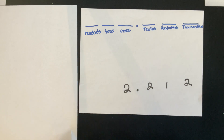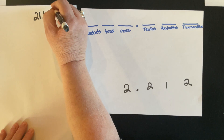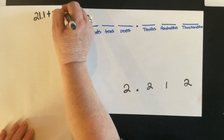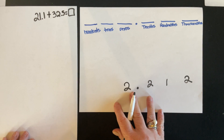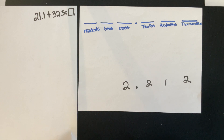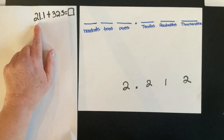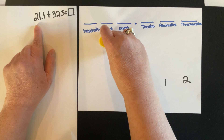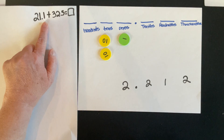Let's take a look at this problem. If I had 21 and one-tenth and I was going to add that to 32 and five-tenths, we're asking kids to find the sum. Here's a place value mat — there is one available through EAI, but I drew mine because we didn't have one today. The first thing I'm going to do is model this problem. So 21 and one-tenth is two tens, one one, and one tenth.